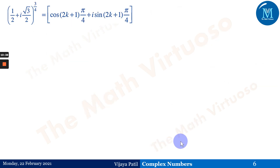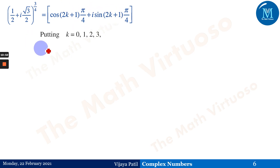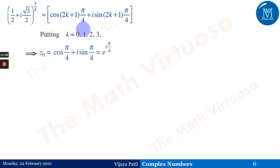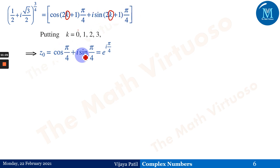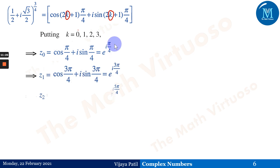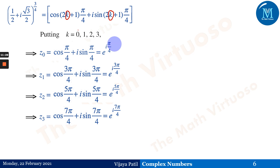Since it is to the power 1/4, we will get 4 roots by putting k = 0, 1, 2, 3. For k = 0: cos(π/4) + i sin(π/4) = e^(iπ/4). We similarly find z₁, z₂, z₃. Then the continued product means z₀ × z₁ × z₂ × z₃.